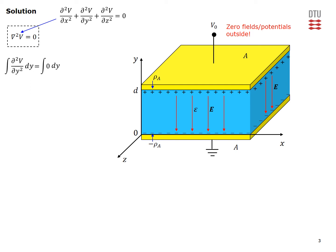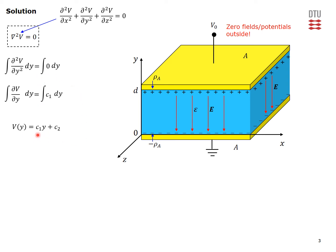So the equation we will have to solve is this second-order ordinary differential equation in Y. We integrate twice with respect to Y to get the potential at any point inside of the dielectric. The first integration on both sides gives the first derivative of the potential equal to an arbitrary integration constant C1. Integrating one more time with respect to Y gives C1 times Y plus another integration constant C2. So we now have the potential as a function of Y in the dielectric between the two conducting plates, with two unknown integration constants.